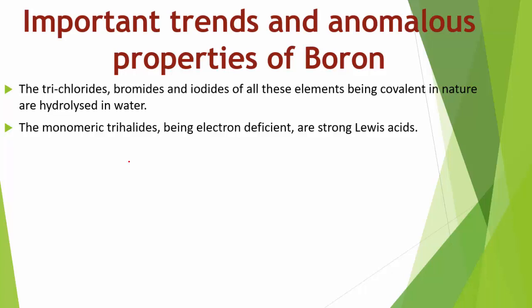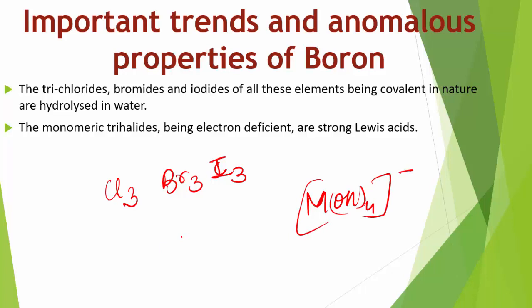Some important trends in Group 13: trichlorides, bromides, and iodides of all these elements are covalent and hydrolyzed in water, forming tetrahedral M(OH)₄⁻ or octahedral M(H₂O)₆³⁺ species — except boron, which does not form these in aqueous medium. Monomeric trihalides being electron-deficient are strong Lewis acids.